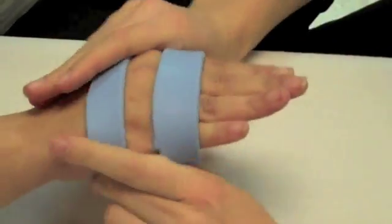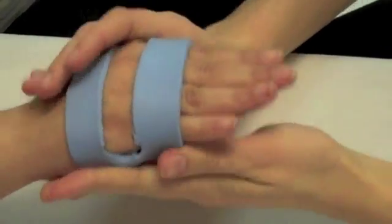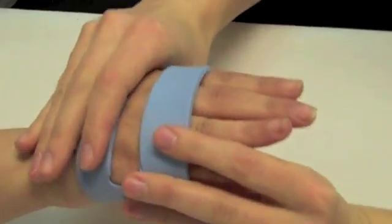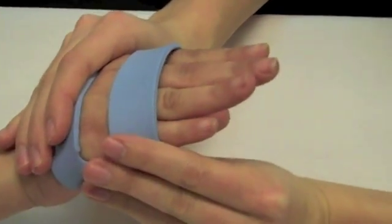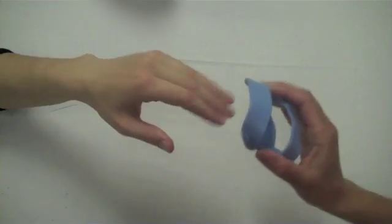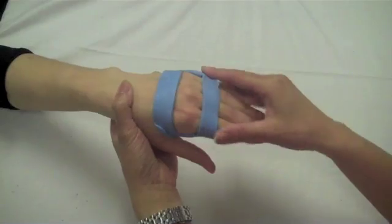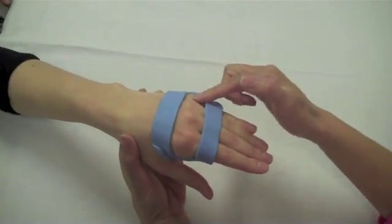Lateral edges of the splint should be vented volarly to reinforce the splint. Gently slide the splint onto the patient's hand. Make sure the MCP joints are cleared.